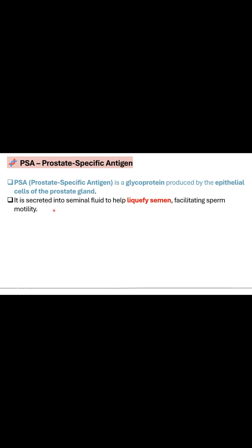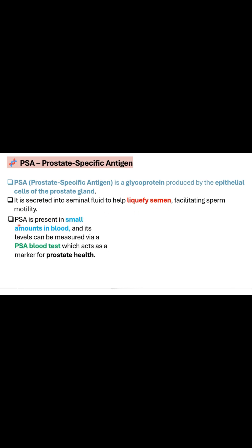Let us first see what is PSA — prostate specific antigen. It is a glycoprotein secreted by the epithelial cells of the prostate gland and it is secreted into the seminal fluid to liquefy the semen, thus facilitating sperm motility. The PSA is present in small amounts in blood also, and that is why its levels can be measured through the PSA blood test, which acts as a marker for prostate health.